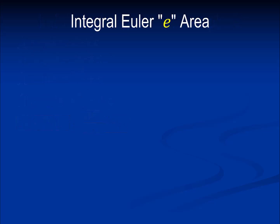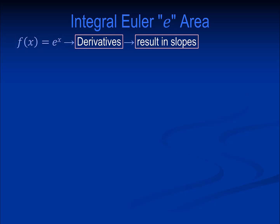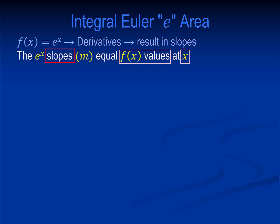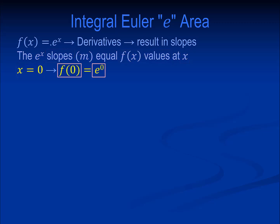How about some integral Euler e areas? Consider f of x equals e to the x. As covered by the differential calculus video clip, derivatives result in slopes. The e to the x slopes m equal the f of x values at x. When x equals 0, f of 0 equals e to the 0, which equals 1. The slope also equals 1.